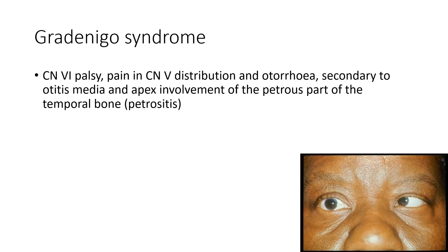Next is Gradenigo syndrome. In this case there is sixth cranial nerve palsy, pain in the fifth cranial nerve distribution, and otorrhea. Gradenigo syndrome is secondary to otitis media and petrous apex involvement of the temporal bone. As seen in this picture, there is sixth nerve palsy.